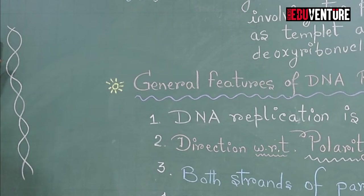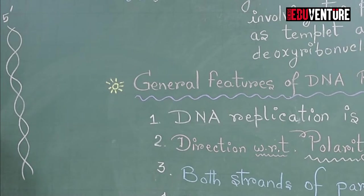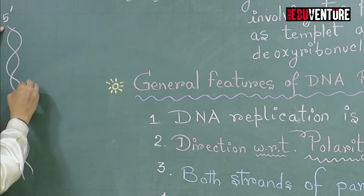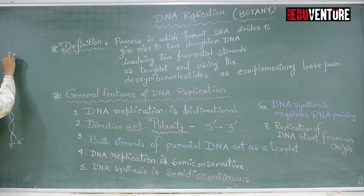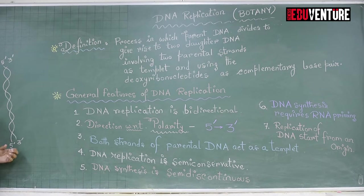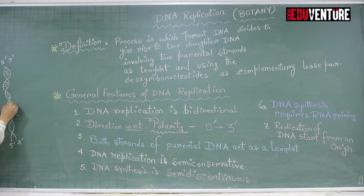The two strands of DNA have polarity. One strand has 5' polarity at one end, represented by the phosphate group at the 5' end, and 3' polarity at the other end, represented by the OH group. The other strand runs antiparallel: its 5' end with phosphate corresponds to the 3' end of the first strand, while its 3' OH end corresponds to the 5' end of the first strand. The two strands are held together by hydrogen bonds.